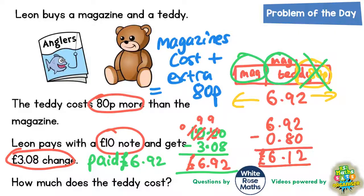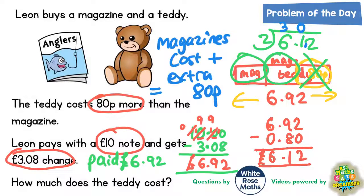So 2 magazines would equal £6.12. If we divide £6.12 by 2: 2s into 6 goes 3 times with nothing left over; 2s into 1 goes no times because 2 is bigger than 1, so carry it across; 2s into 12 goes 6 times. So the magazine must be £3.06.